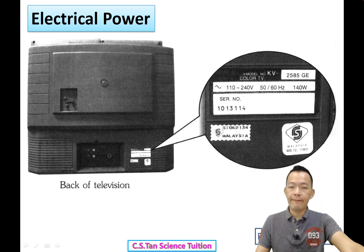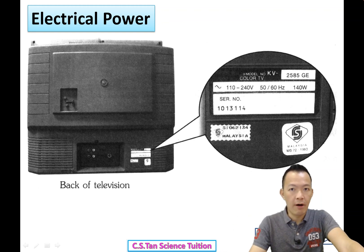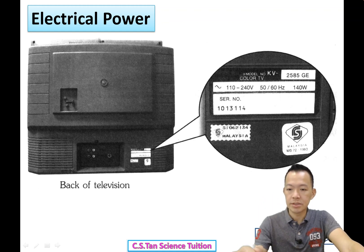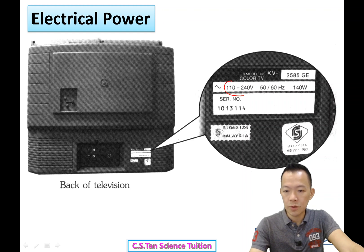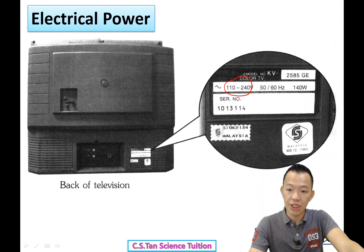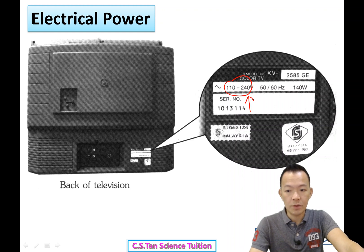If you look at any electric appliance, behind the casing or body, there must be a label. The label shows '110-240' — this is the voltage. 240 means it can be used in Malaysia. It also shows '50 to 60 Hz', which is the frequency of the alternating current.